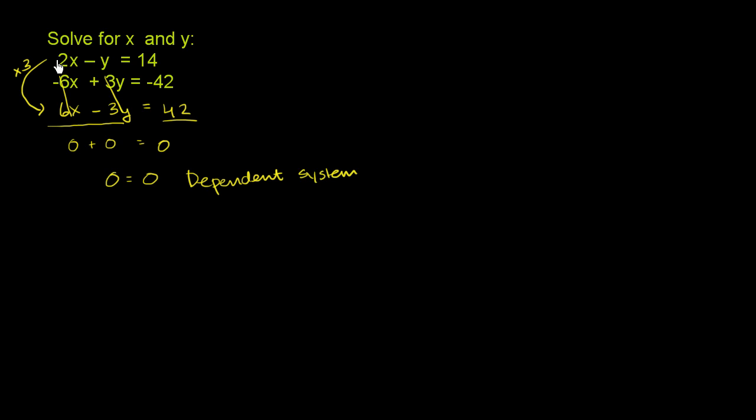And you see it right over here. If you take that first equation, you multiply it by 3, you got 6x minus 3y is equal to 42. If we then multiplied it by negative 1, you would get the exact same equation as the second equation. You would get negative 6x plus 3y is equal to negative 42.